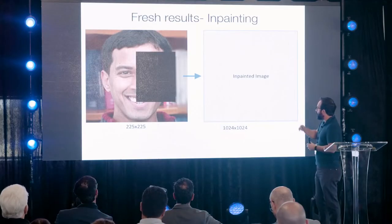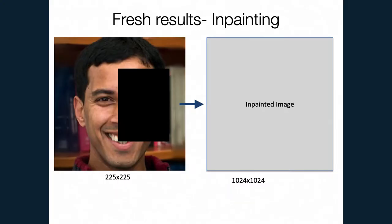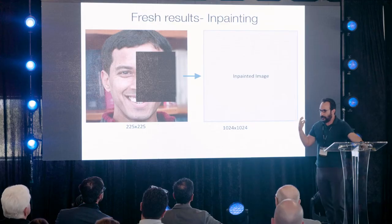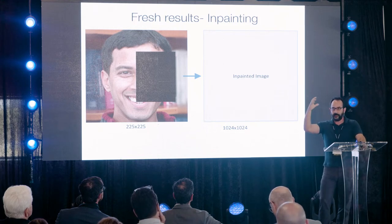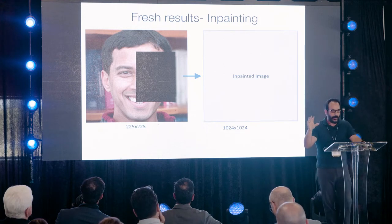Here are results from our lab. This is a picture of my friend Vijay — I downloaded it from the web and removed a bunch of pixels. This is a missing data problem called inpainting. I want to ask my generator not to dream of some random face, but to dream of a face that looks like Vijay. We have an algorithm called CSGM to do that.